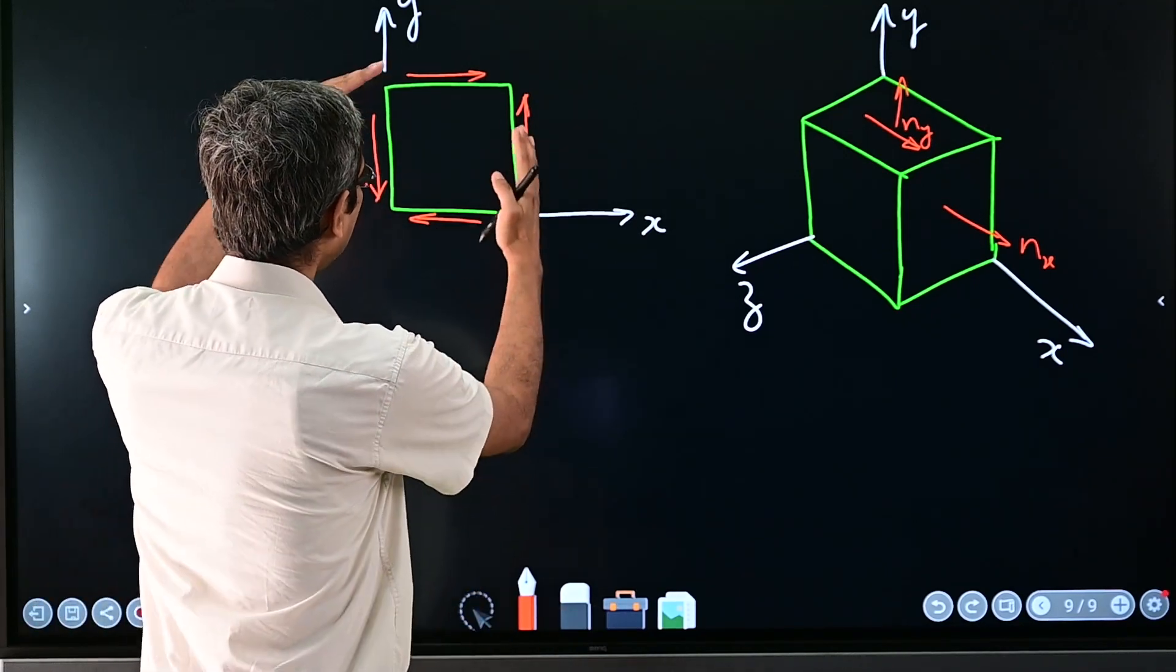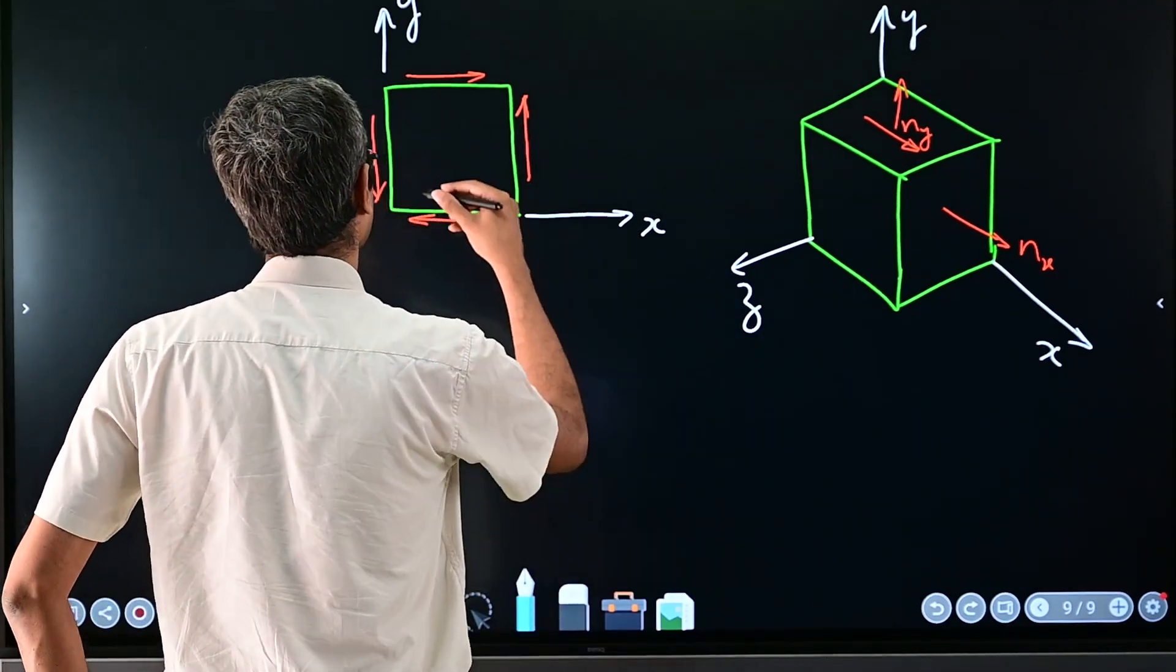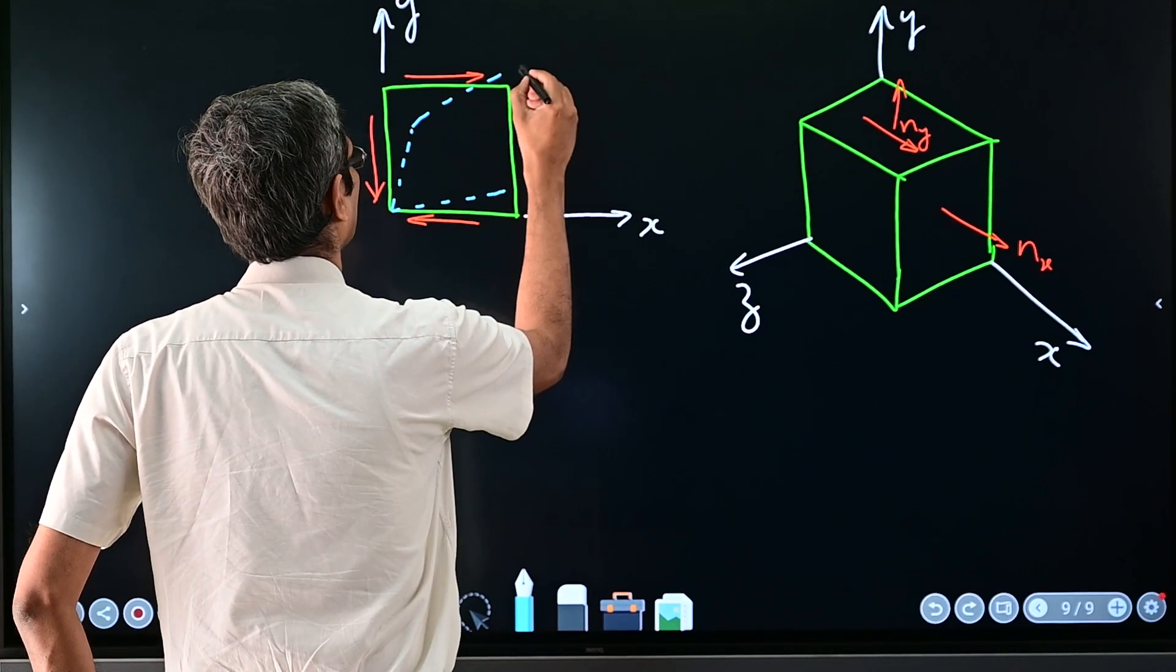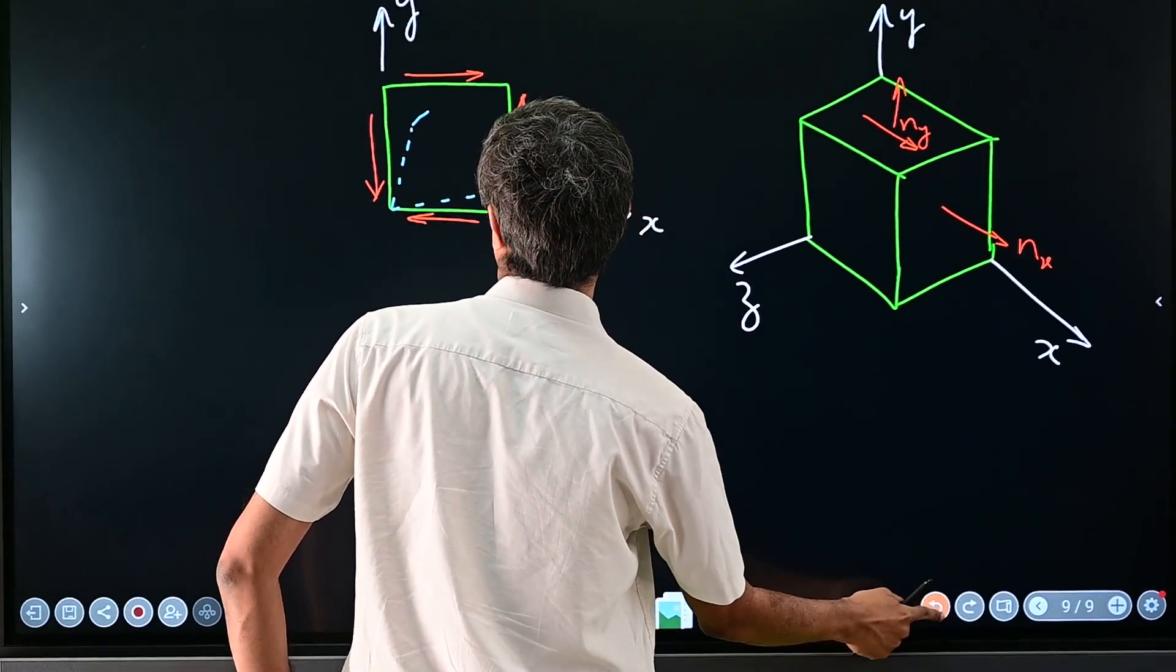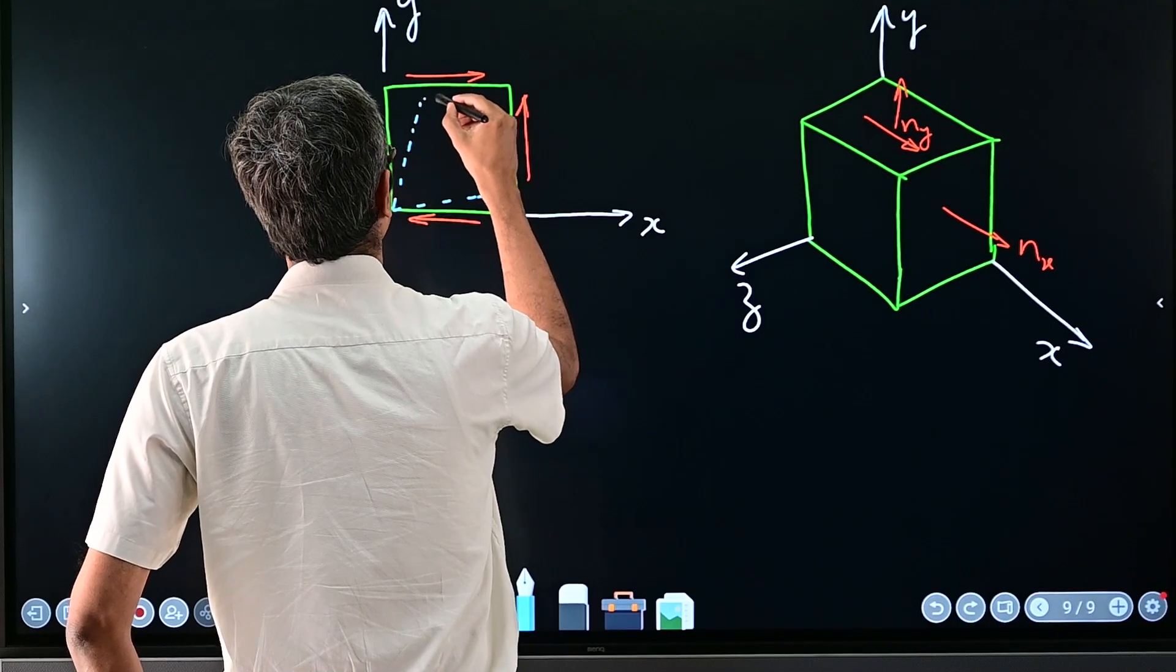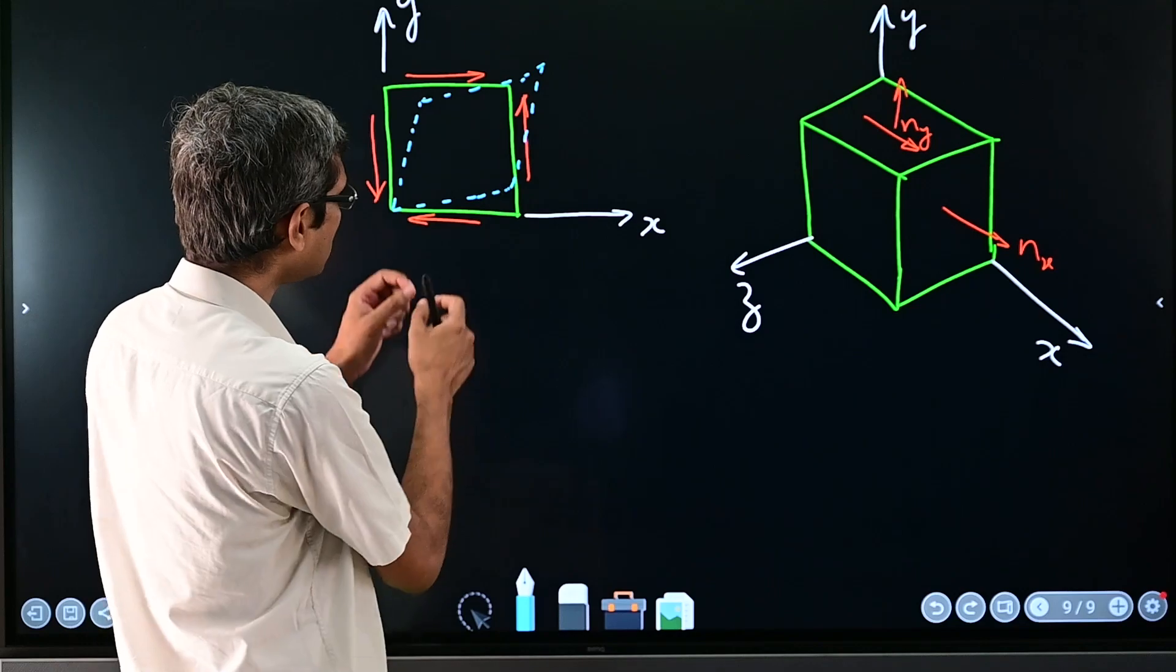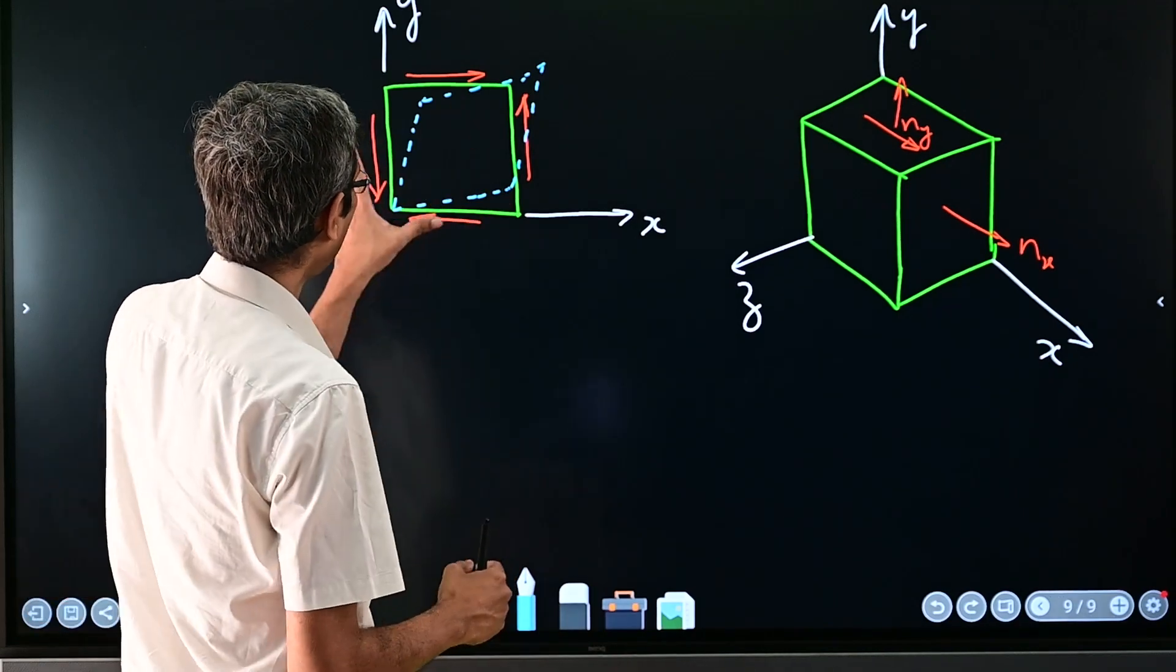Now as soon as these kind of forces are applied what happens is this takes a new shape which will be something like this. So it will become a rhombus, because length can't change because you are not pulling or pushing, so only angles can change.